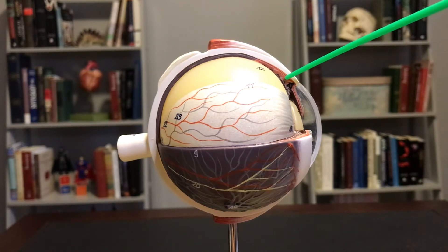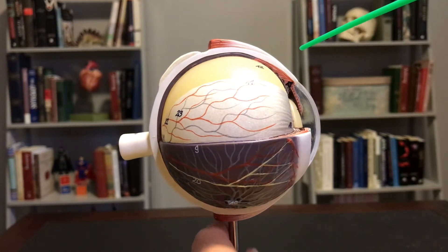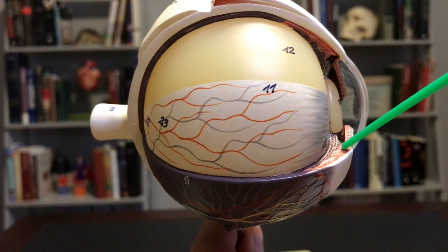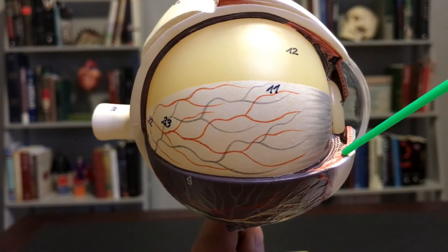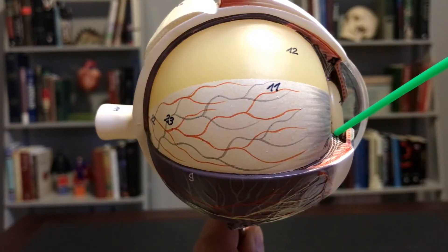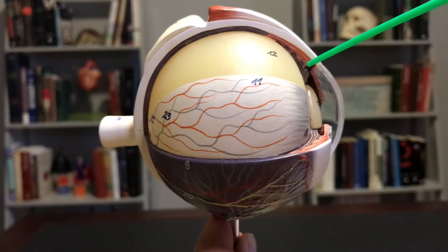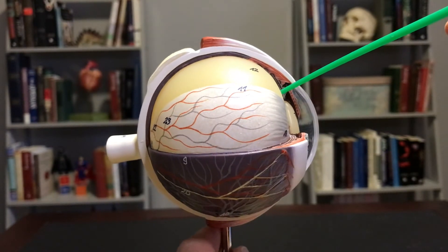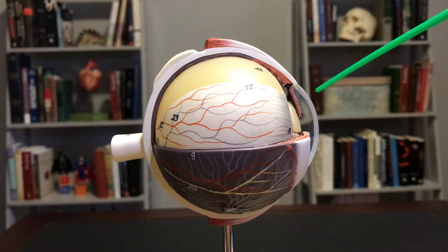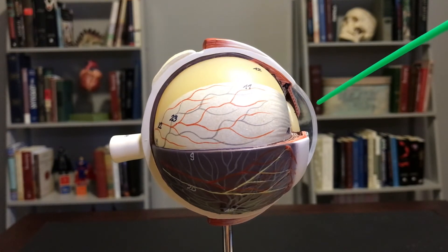You can see the ciliary body here. If I angle this down a little bit, you can see ciliary body here as well in sort of that muscly pinkish color. And then coming from there, we have the zonules or the suspensory ligaments that are grabbing onto and holding that lens in place. This is all part of the anterior segment.